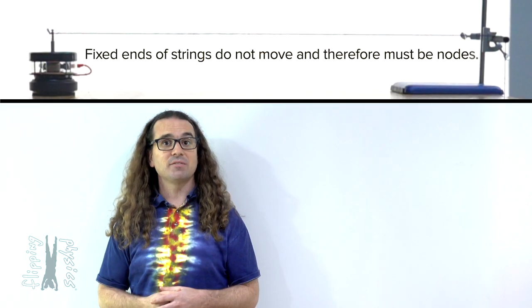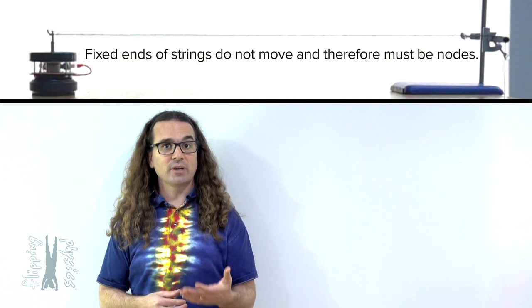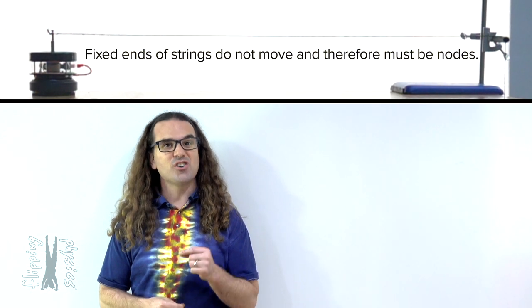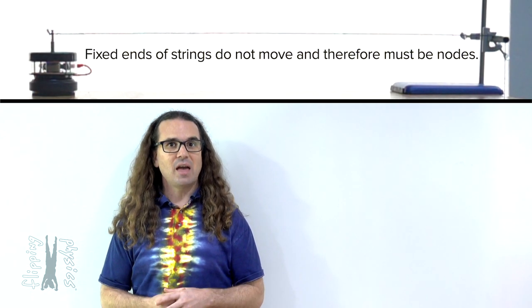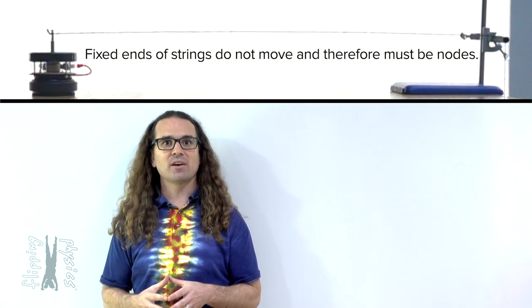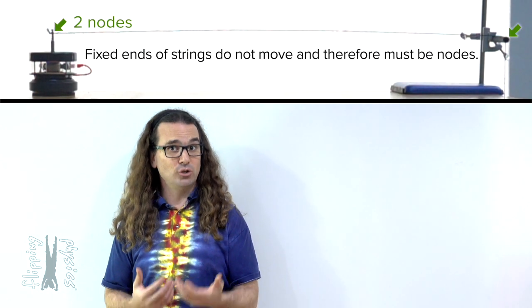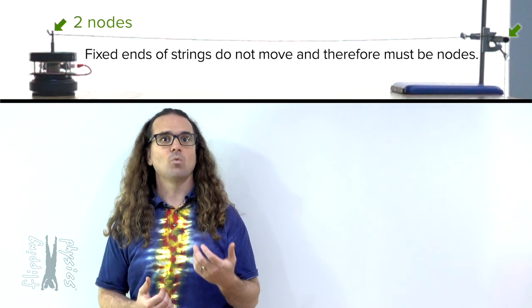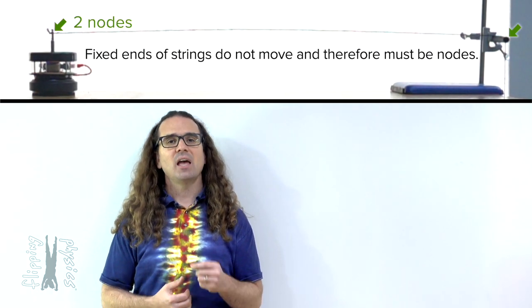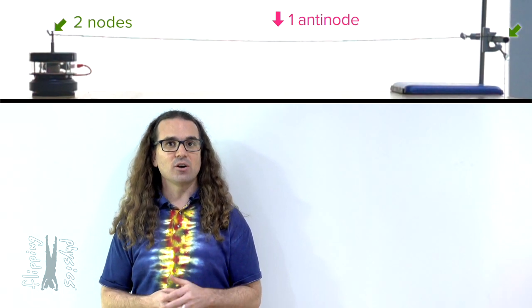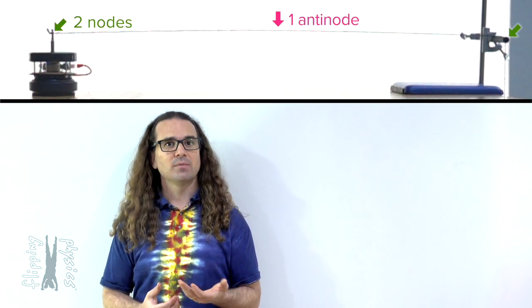A node is a location of total destructive interference, and the net result is that the string does not move at all at each node. That must mean that the two ends of the strings are nodes on a stringed instrument. Both of the ends of the strings on stringed instruments are nodes. That means the first standing wave pattern we can create on a string has two nodes, one on each end, and one antinode in the middle.